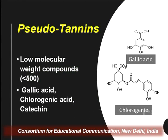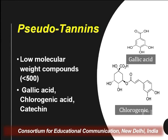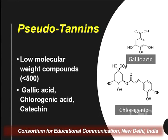Pseudo tannins are low molecular weight compounds. As discussed, tannins should have a specific molecular weight to be considered true tannins. If the molecular weight of a compound is below that specified limit, its structure will be too small. Though it may enter the empty amorphous spaces of amorphous collagen fiber, it will not be able to form cross-linking between those collagen fibers, and therefore cannot convert animal skin into leather.